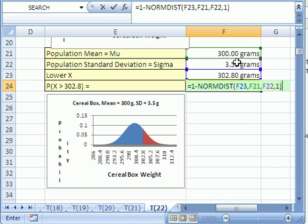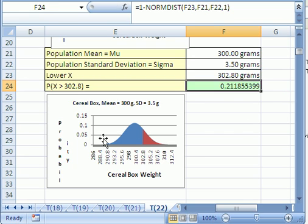By the way, if you put a zero in there, it'll calculate just the probability associated with just that individual value. But here, this 1 minus the area here will give us the probability that it's greater than 302 and it's 0.211855399.